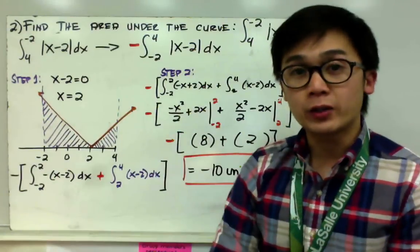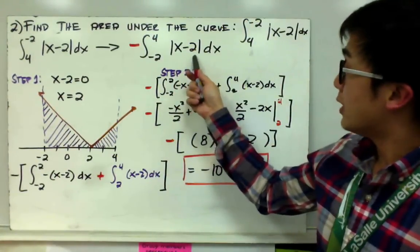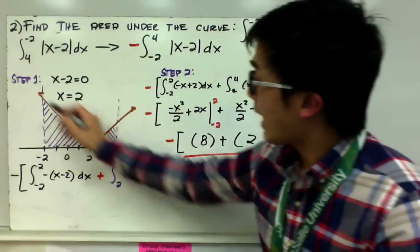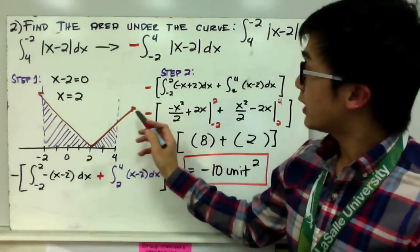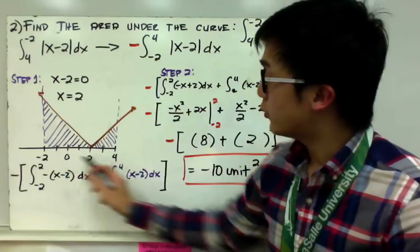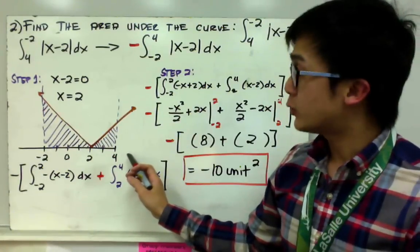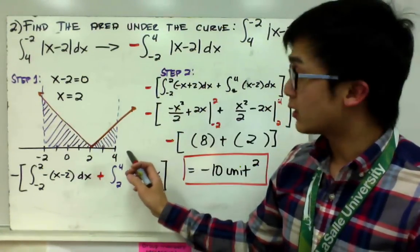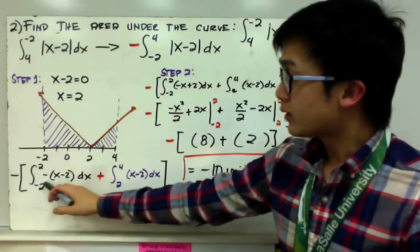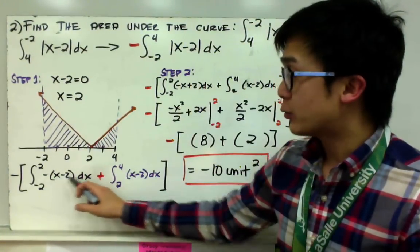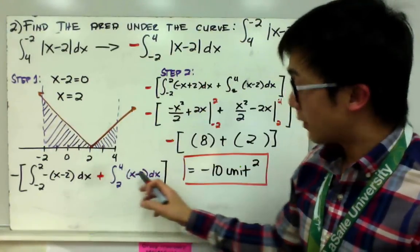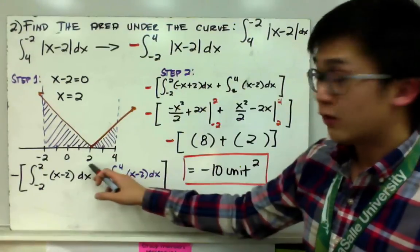Step one: find the x-intercept. Setting x minus 2 equal to 0 gives x equal to 2. This is the x-intercept for the absolute value function graph. The interval is from negative 2 to 4, so I shaded that region to visualize the two functions. On the left side, it will be the negative quantity (x minus 2) dx from negative 2 to 2; and for the second area, the integral of (x minus 2) dx from 2 to 4.